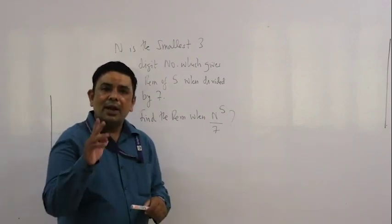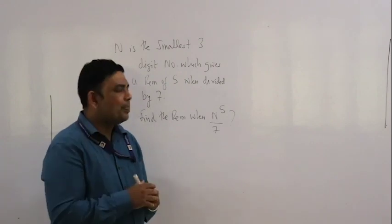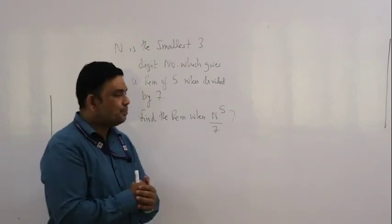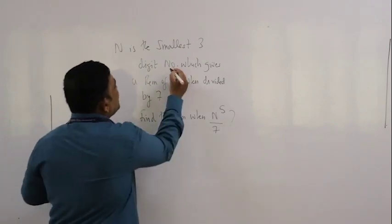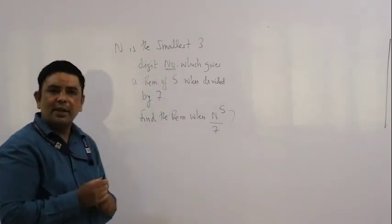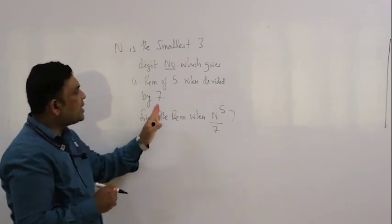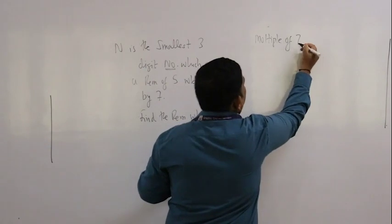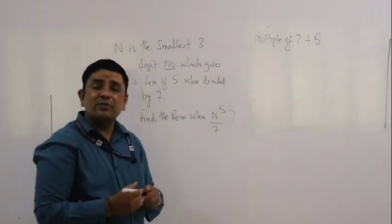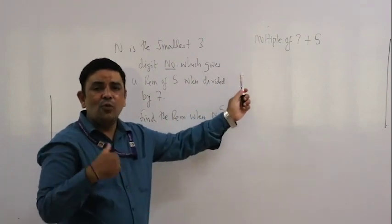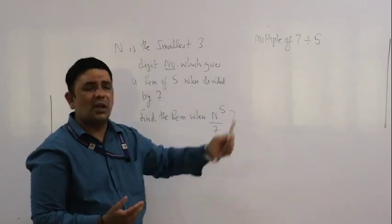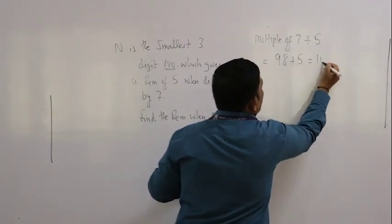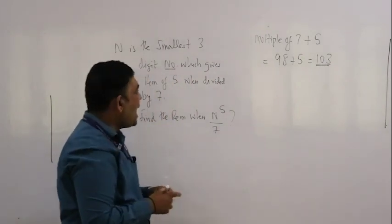...when N to the power 5 is divided by 7. The first approach: a student thinks, what is the smallest three-digit number with this property? It's not very difficult — it's a multiple of 7 plus 5. The multiple of 7 closest to 100 is 98, and 98 plus 5 is 103. So N happens to be 103.